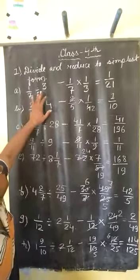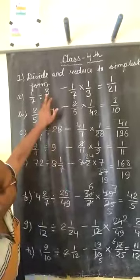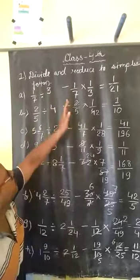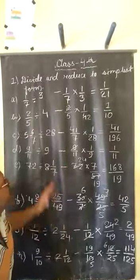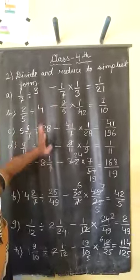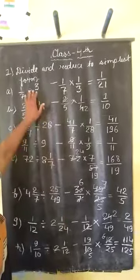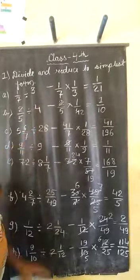Here 1 upon 7 divided by 3. First we write 1 upon 7, then we change the sign. The divide sign will be changed into multiplied sign. When we change the divide sign to multiplied, the number will be reciprocal. Means 3 upon 1 will be 1 upon 3.